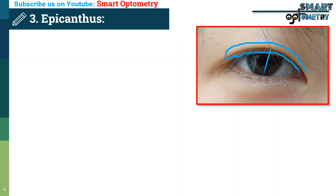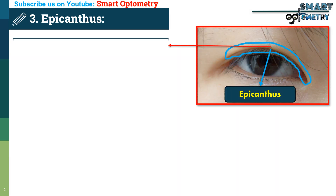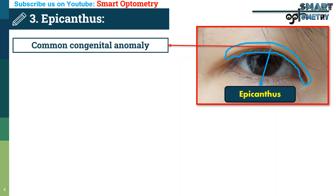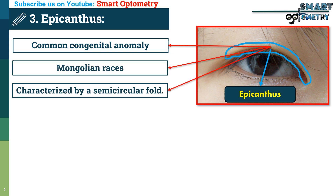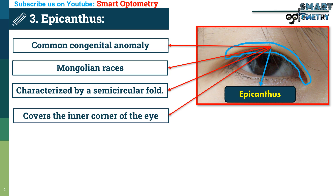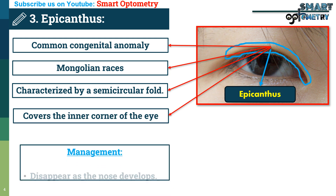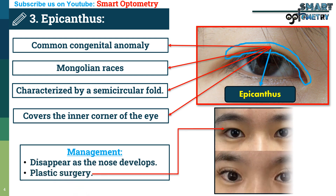Now, epicanthus. Epicanthus is a common congenital anomaly, particularly among the Mongolian races. It is characterized by a semicircular fold of skin that covers the inner corner of the eye, or the medial canthus. This fold may disappear as the nose develops, but in more severe cases, plastic surgery can be performed to correct the condition.